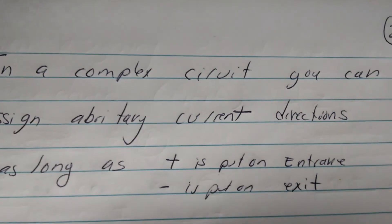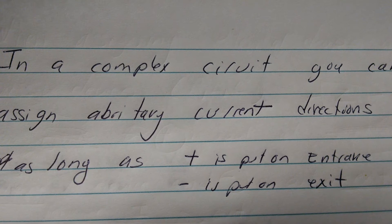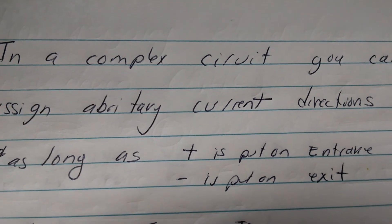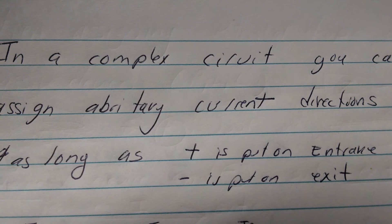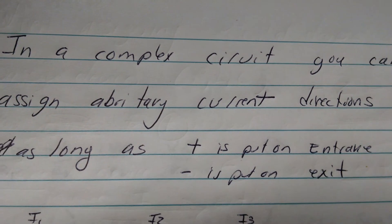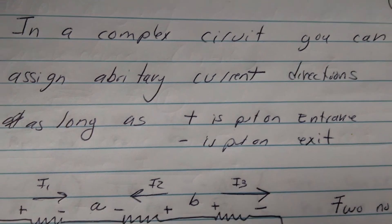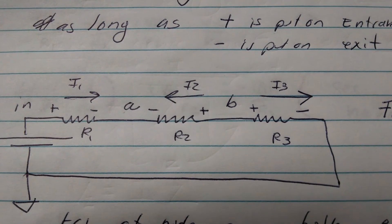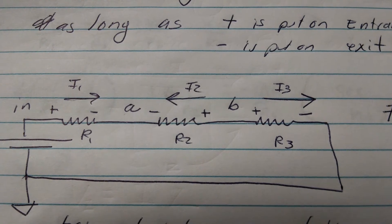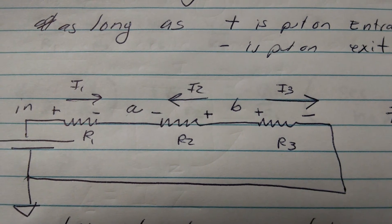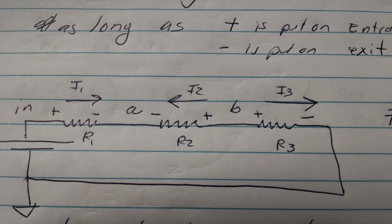That's pretty easy. In a complex circuit, you can assign arbitrary current directions as long as the positive, or the higher potential, is put on the entrance and the negative is put on the exit. If you reverse that, you're going to get the wrong answer. Let's just take an example that you could probably do in your head — the total current would be the voltage divided by the sum of those three resistors.